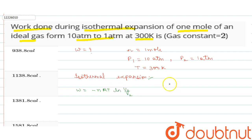We don't have V2 and V1 given, but P2 and P1 are given, so we will convert V2 over V1 to P1 over P2.